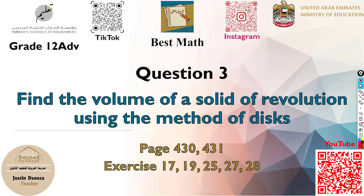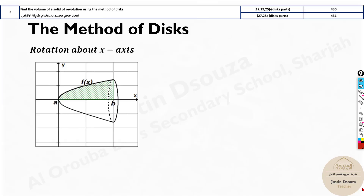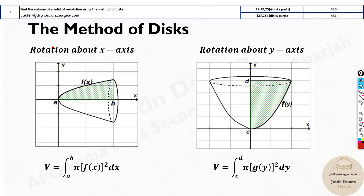Question 3 is to find the volume of solids of revolution using the method of disks. This is similar to question 17, and I would highly encourage all of you to go to question 17, watch it thoroughly, and then come back here, because if you watch that video first, this will be a very easy video.